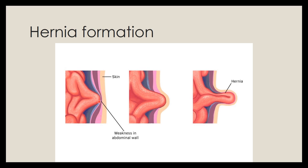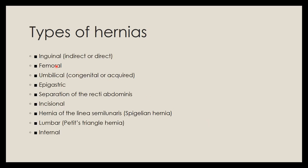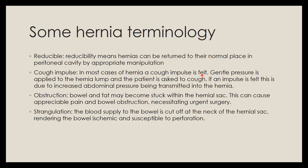A weakness in the abdominal wall allows a viscus to protrude and form a bulge known as a hernia. There can be different kinds: inguinal hernias (direct or indirect), femoral hernias, umbilical hernias (congenital or acquired), epigastric hernias, incisional hernias, hernias in the linea semilunaris, lumbar hernias, internal hernias, and hernias due to weakness or separation of the rectus abdominis.